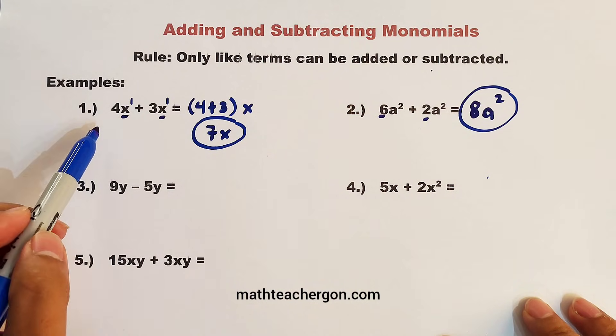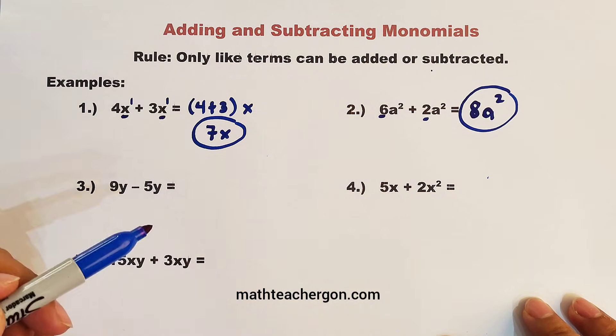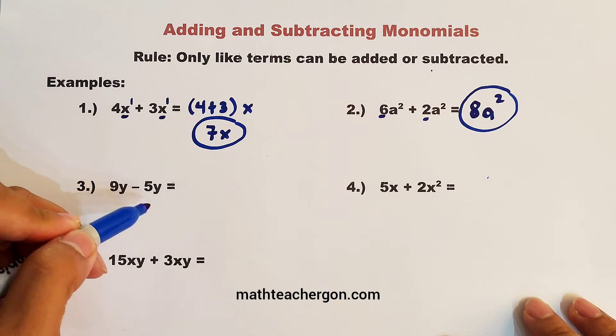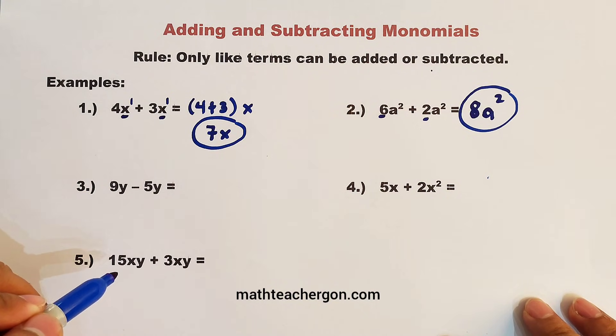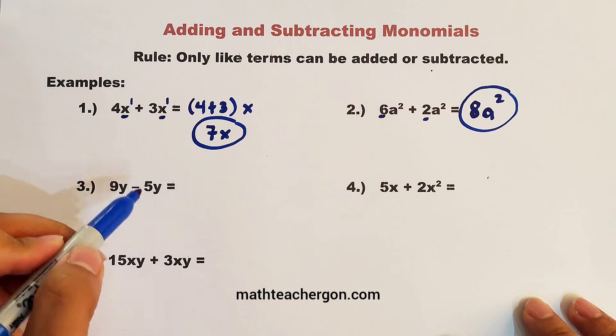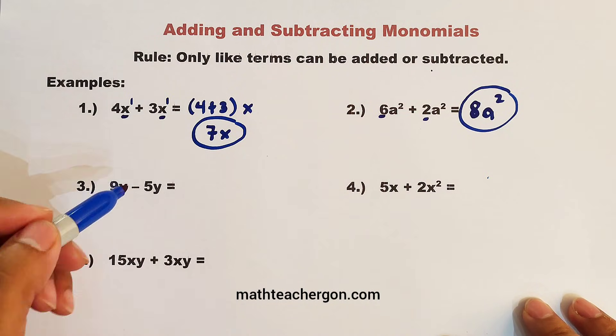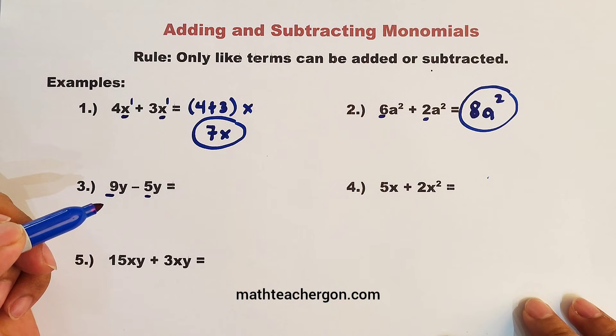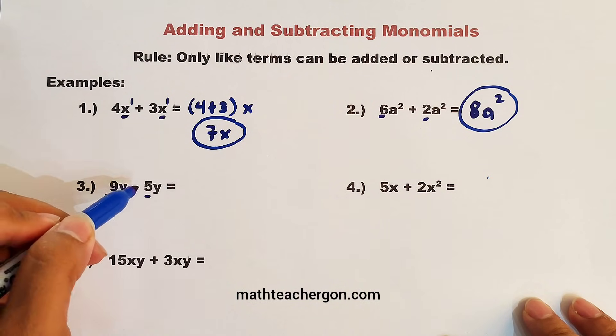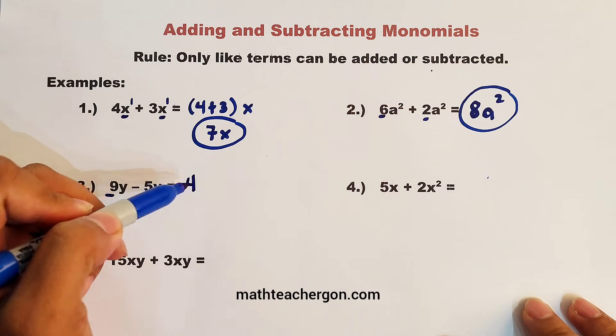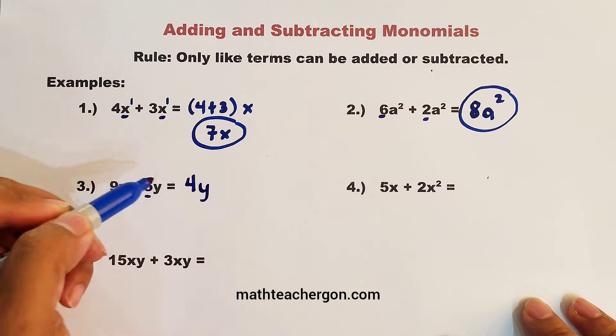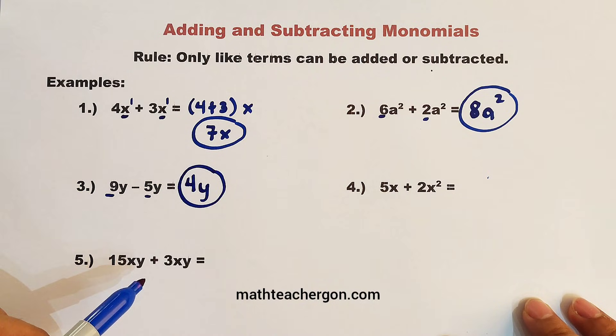So we are done with examples number one and number two that focuses on addition. Let's continue with number three. In number three, 9y minus 5y. So are they like terms? Yes. But this time, this is subtraction. So what we need to do is to subtract first the coefficients. We have 9 minus 5, that is equal to 4. Then copy the common variable, y, and this is the correct answer, 4y.